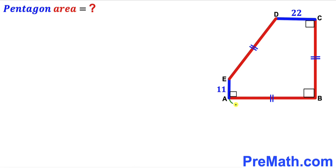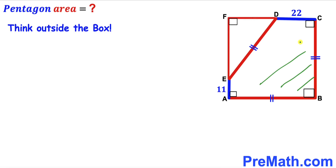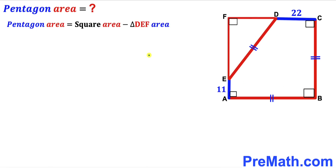We can see that side AB equals side BC and this angle is a 90 degree angle. We are going to think outside the box — we have created this right triangle DEF and we are going to get this square ABCF. Now let's make an observation: the pentagon area is going to be equal to the area of this whole square ABCF minus the area of this right triangle DEF.